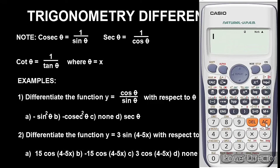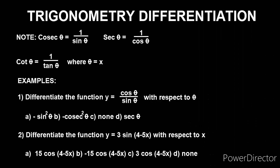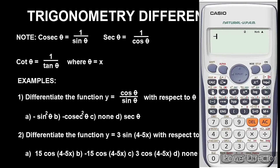Option B says minus cosec squared θ. There is no cosec function on the calculator, so we replace cosec θ with one over sin θ. Enter it as: minus, open bracket, 1 over sin(alpha x), close bracket, squared. Press equals and we get minus 1.209. This matches our differentiated result, so option B is the answer.